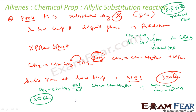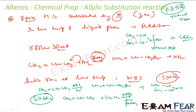You can also use SO2Cl2 in place of NBS to achieve the same allylic substitution. The reaction is: CH2=CH-CH3 with SO2Cl2, in the presence of light and a peroxide, gives CH2=CH-CH2Cl plus SO2.